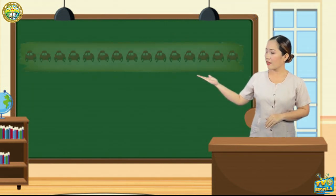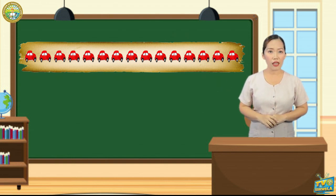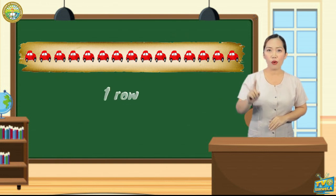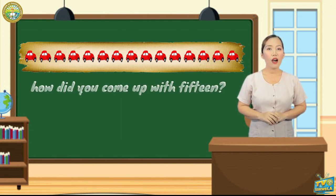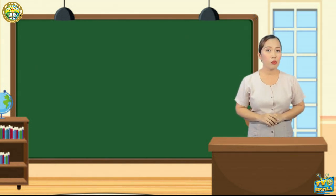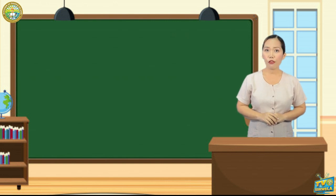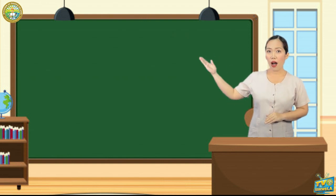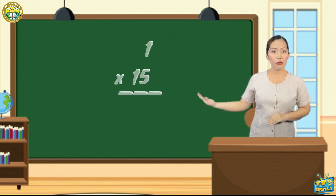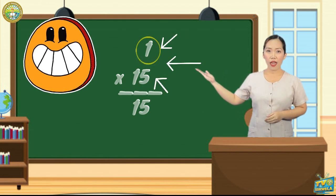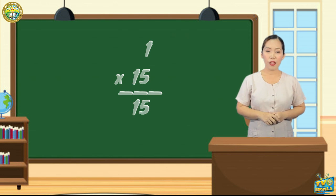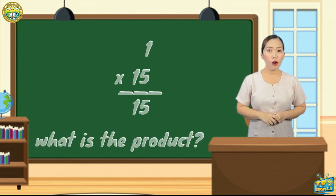Take a look at these. How many rows of toy cars do you see? Just one row. How many toy cars are there in a row? Fifteen! Therefore, one times fifteen equals fifteen. In this multiplication sentence, what are the factors? One and fifteen. What is the product? Fifteen.